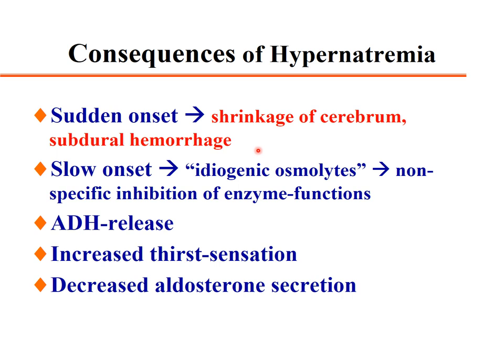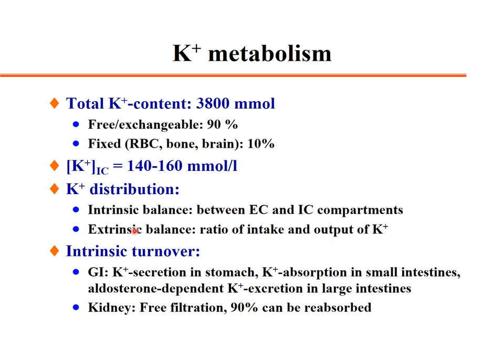If hypernatremia happens suddenly, cerebral shrinkage and subdural hemorrhage can develop. With slow onset, ideogenic osmolytes develop, along with non-specific inhibition of enzyme function. The compensatory regulatory response includes increased thirst sensation and decreased aldosterone secretion.